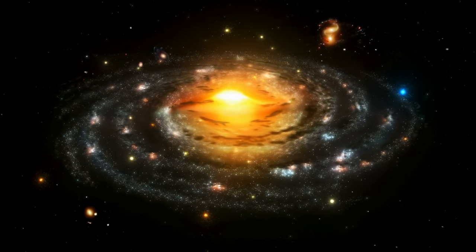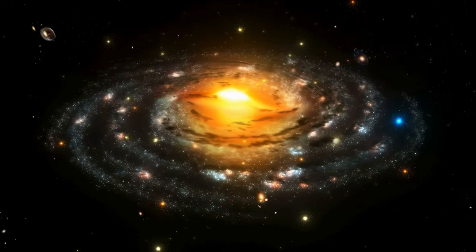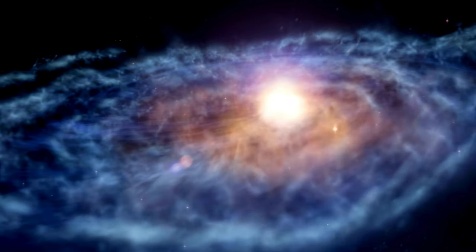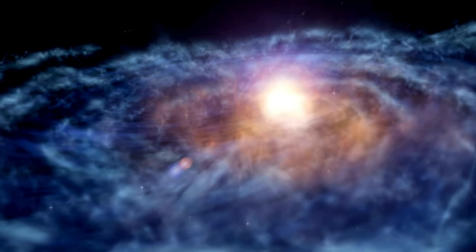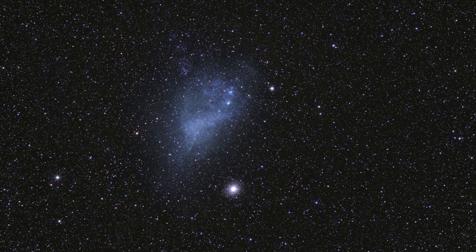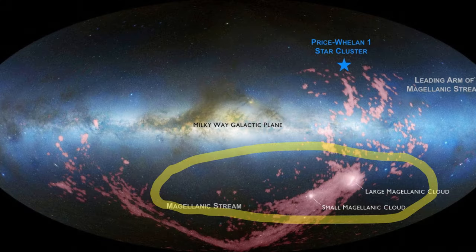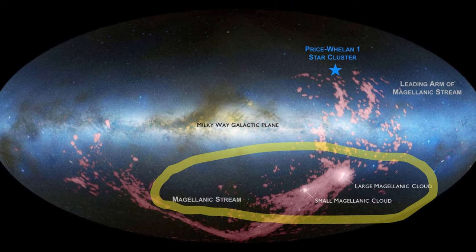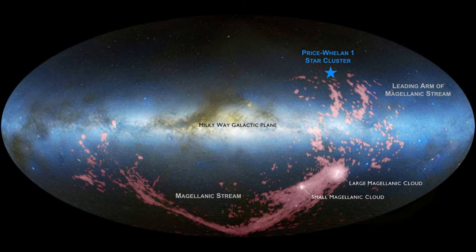The Milky Way isn't static. It's constantly in motion. As it spins, it also interacts with other galaxies. The most prominent of its companions are the Magellanic clouds, two smaller, irregular galaxies that orbit the Milky Way.